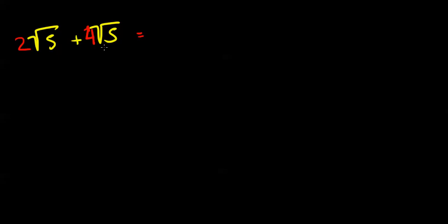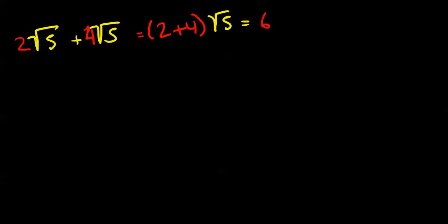You can only add and subtract radical expressions if they have like radicals. In this case they do, so let's go ahead and add them. You just add the numbers in the front — 2 plus 4 — and then you keep the radical. So our answer would be 6 square root of 5.